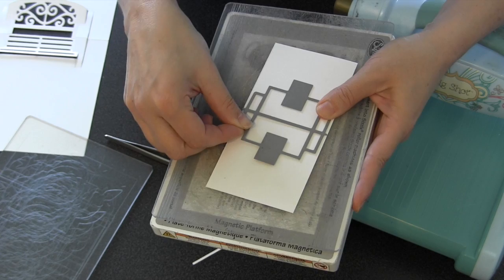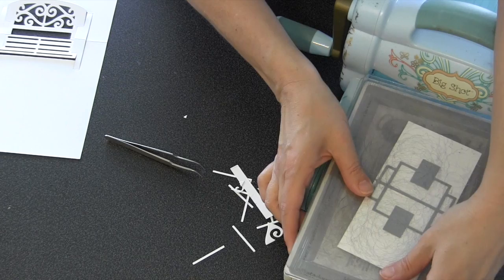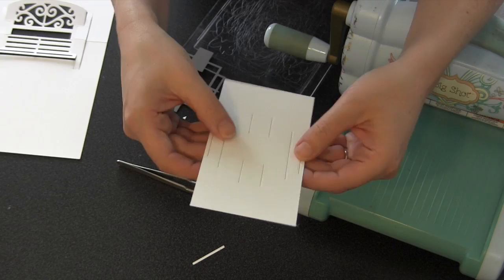One of the techniques I wanted to show in the video today is how you can combine a second pop-up, in this case the Lots of Pops die, to be able to get more little pop-up platforms in your card. I'm going to use that little small card. I'm going to line up the Lots of Pops on the fold and then cut it into the card.